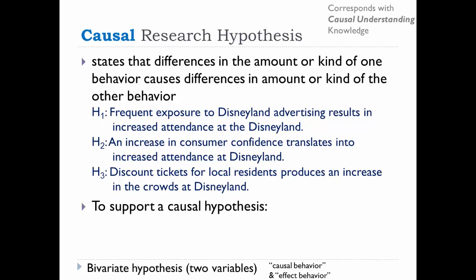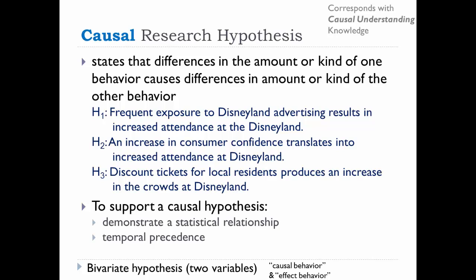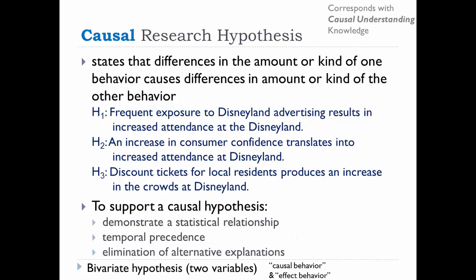To support a causal hypothesis, you need to meet three criteria. First, you have to demonstrate that a statistical relationship exists between the two variables — you have to prove association or correlation before you can even begin to investigate causation. Second, there must be temporal precedence, meaning the cause must happen before the effect. If increased attendance happens before an increase in consumer confidence, the causal hypothesis isn't supported. And finally, you have to eliminate any alternative explanations, such as warmer-than-usual winter weather.